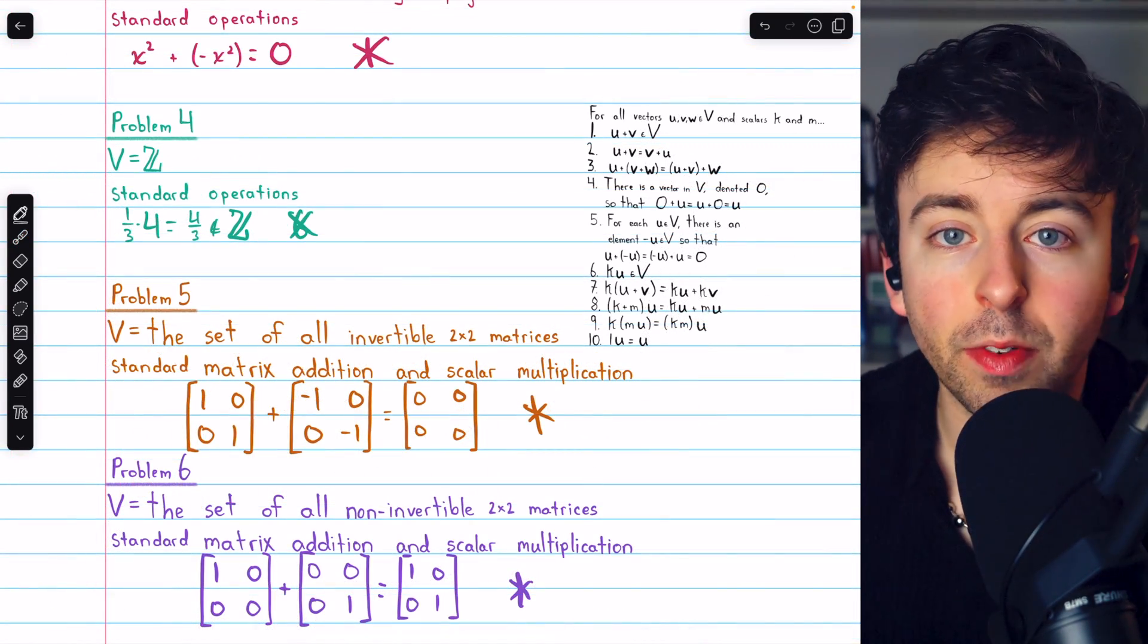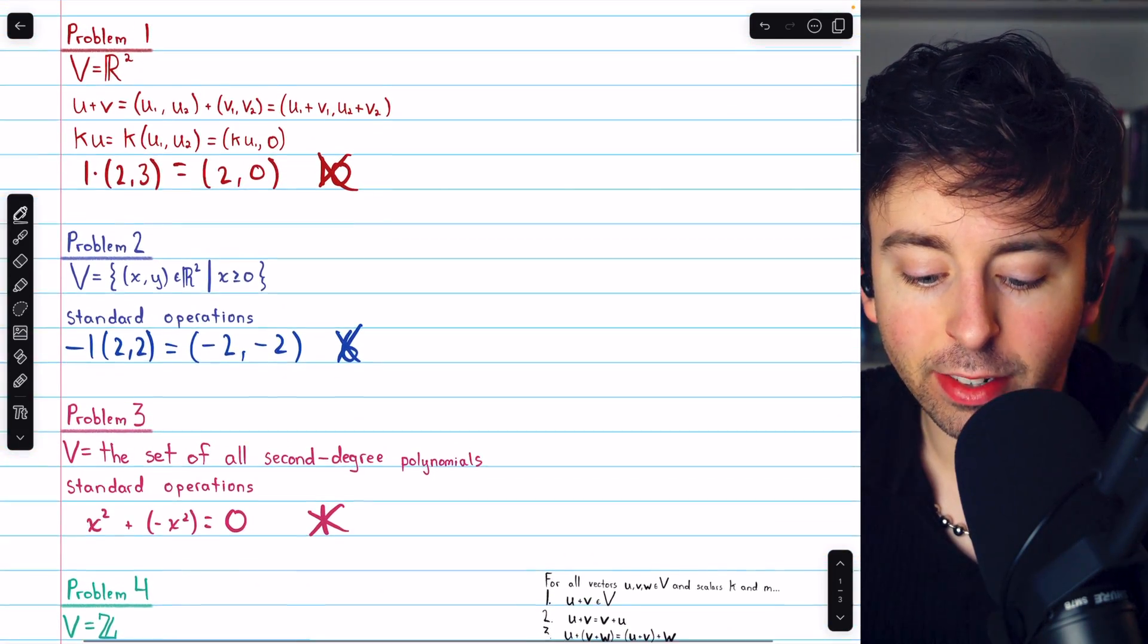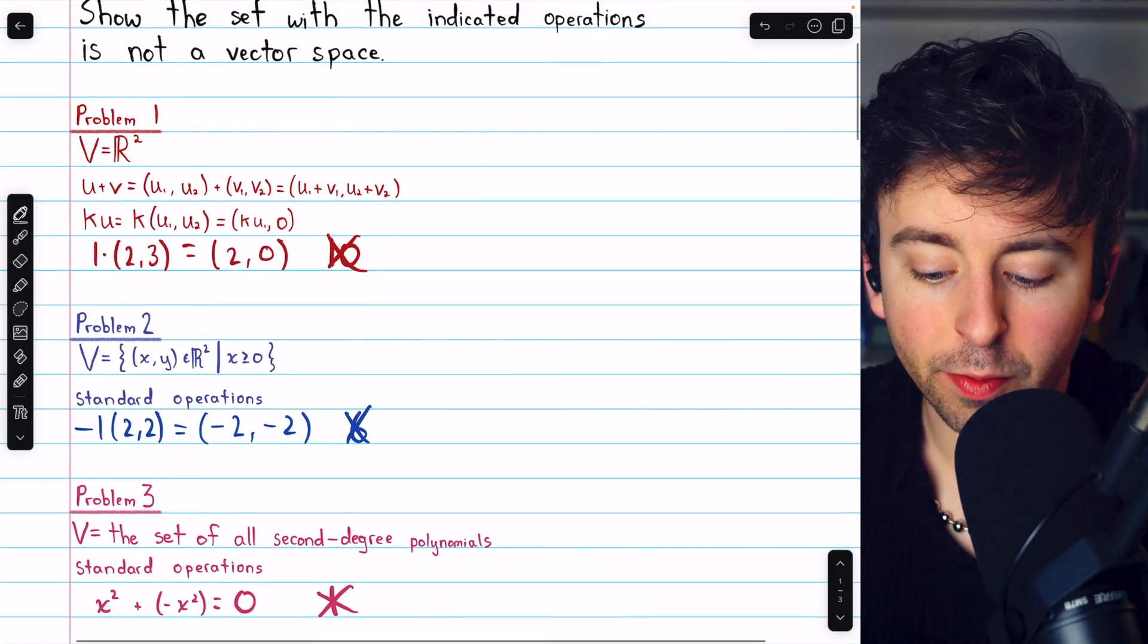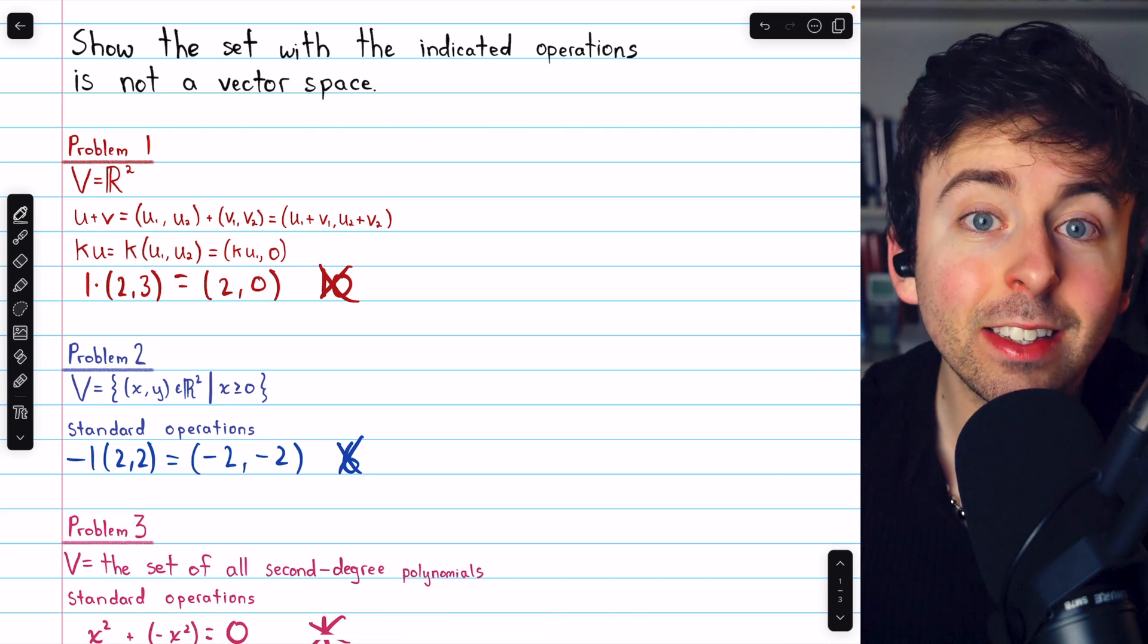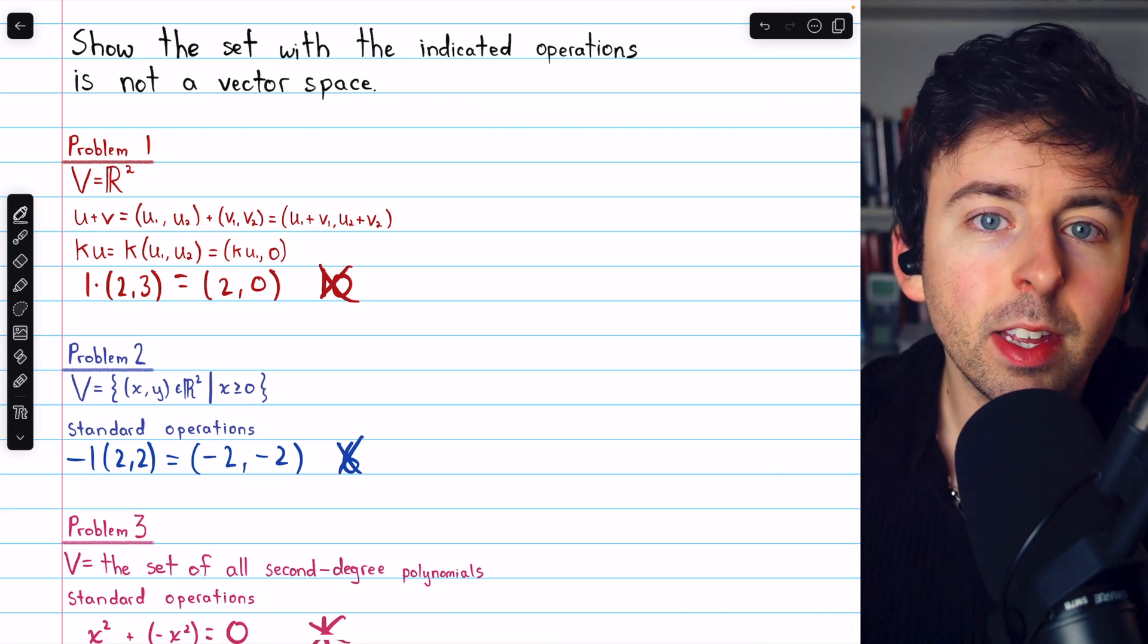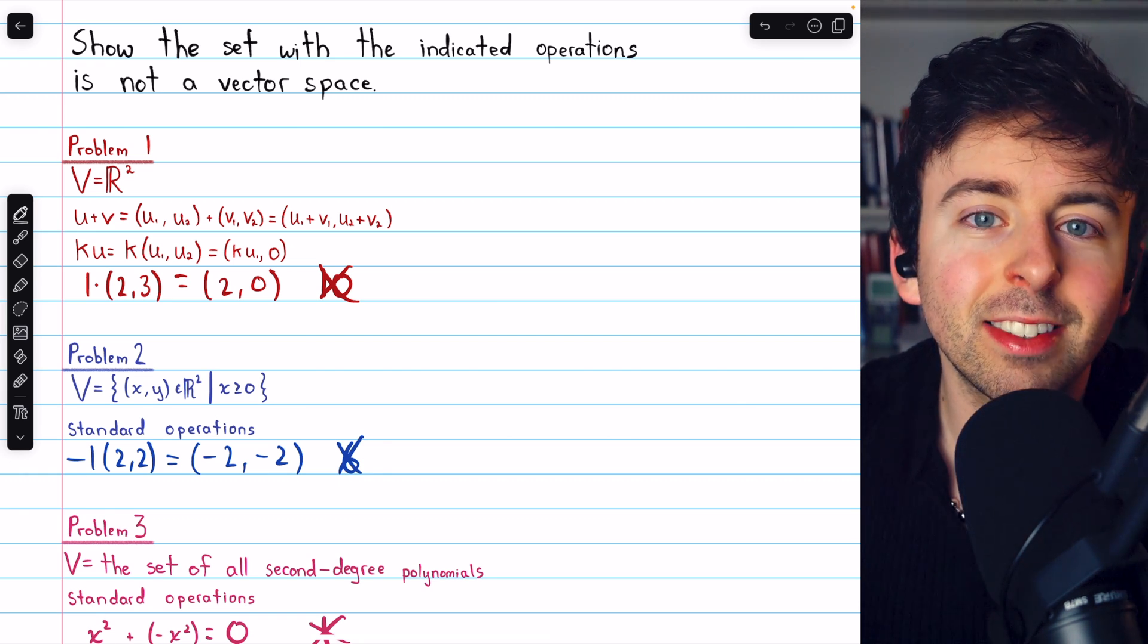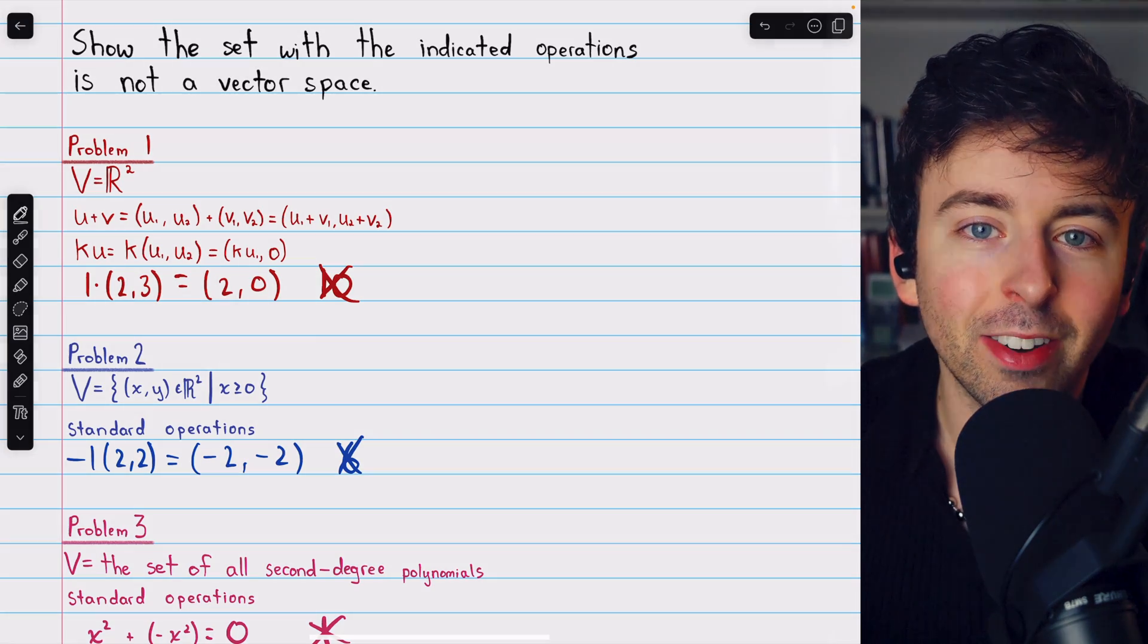So those are a few examples of how you can show that a given set with an indicated operation is not a vector space. We just have to find an axiom that it does not satisfy, and often there are multiple choices. Let me know in the comments if you have any questions, and be sure to check out my linear algebra course and linear algebra exercises playlists in the description for more. Thanks for watching.